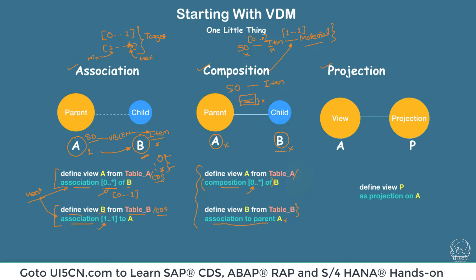Again, in this case the source can be either a table or a CDS view on both sides. One additional note: sometimes you may see only one value written for cardinality rather than two. For example, if someone writes just '1', that is equivalent to writing 0 to 1. Also worth noting: in association, the child can exist even if the parent doesn't exist, so association is not a strict parent-child relationship — hence why it is represented with a dotted line.